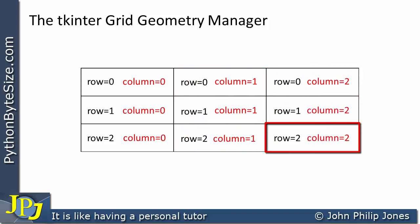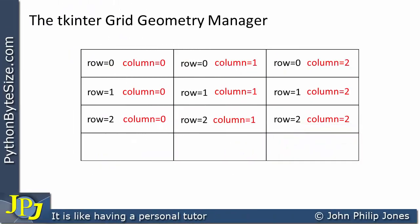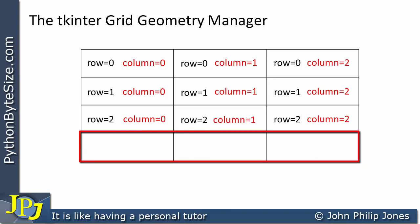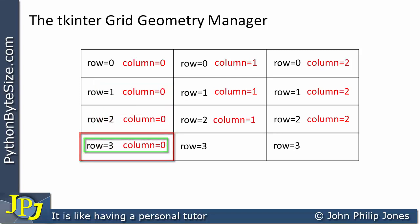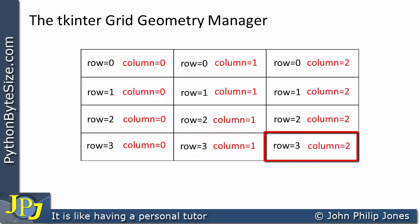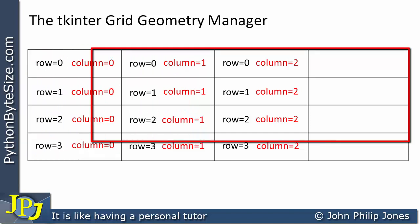If you decided you wanted 12 separate zones within the window, you can add another row — row 3 — with these additional three zones. All of these are in row 3. This zone is in column 0, so it is row 3, column 0. Consequently, this one is in column 1 and this one is in column 2, making it row 3, column 1. We can also add an extra column, increasing the number of zones to 16.